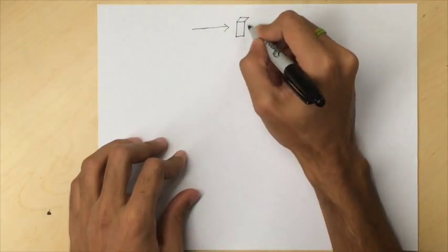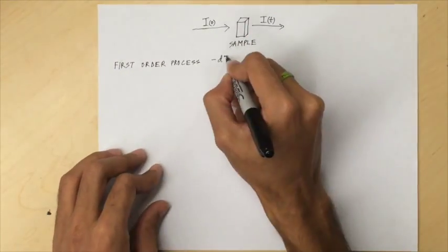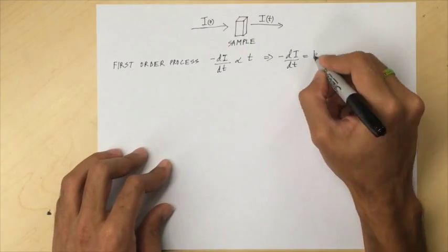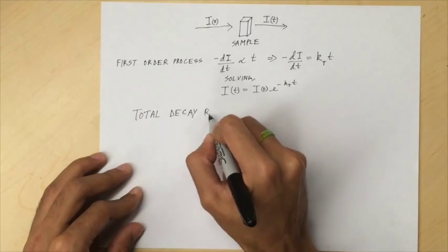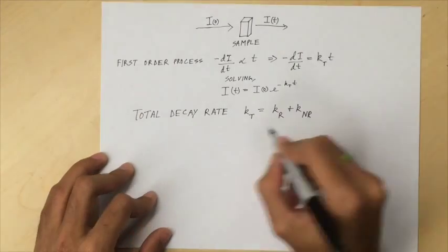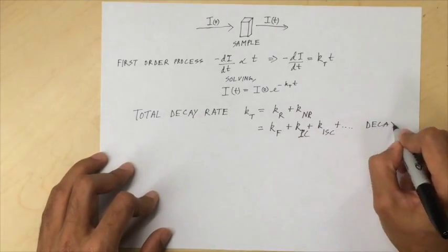As fluorescence intensity decay is a first-order process with respect to time, the intensity at any time T can be obtained from the given equation. The total rate of decay of electrons from the excited state denoted by kT depends on the total number of decay pathways, whether through radiative or non-radiative decay.